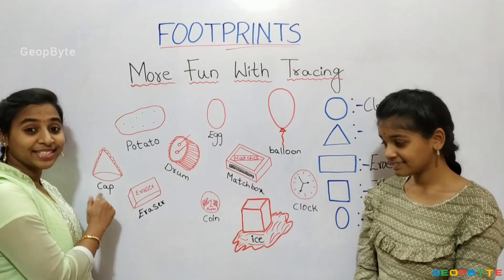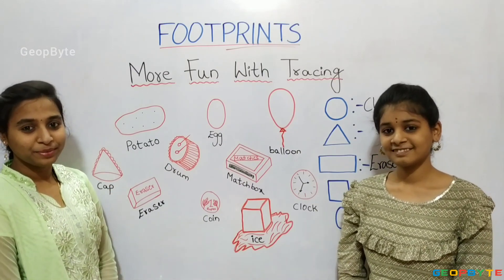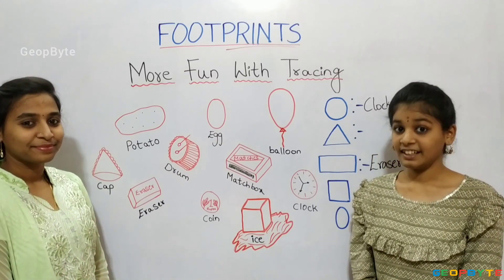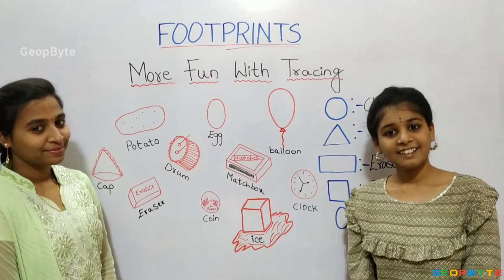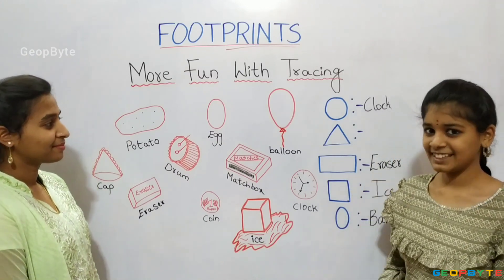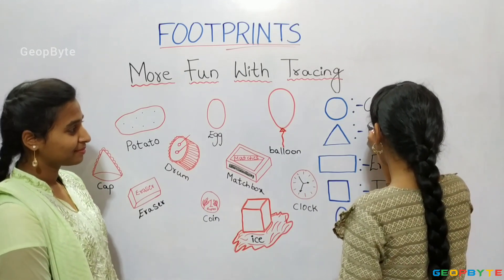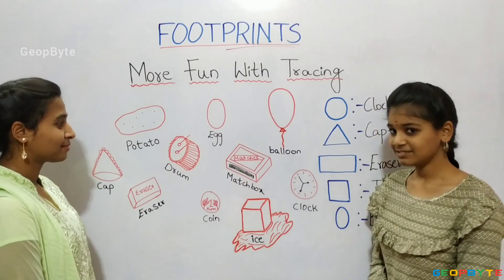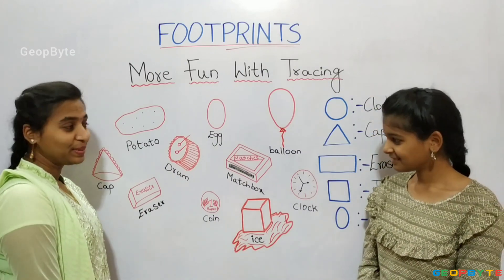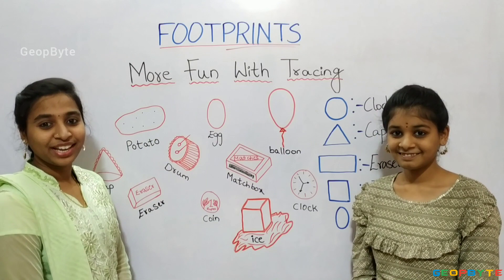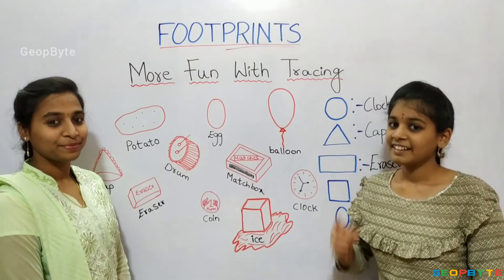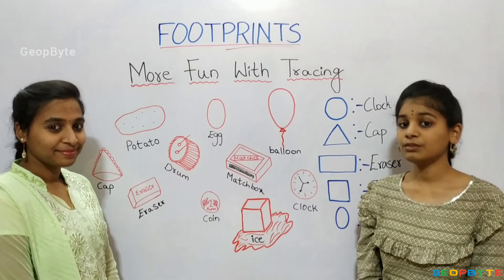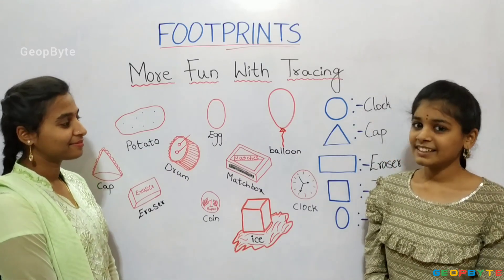Now, this cap is in which shape? Yes, correct answer. It is in the shape of a triangle. Let us write. Now, this egg is in which shape? Yes, correct answer. It is in the shape of oval. Let us write.